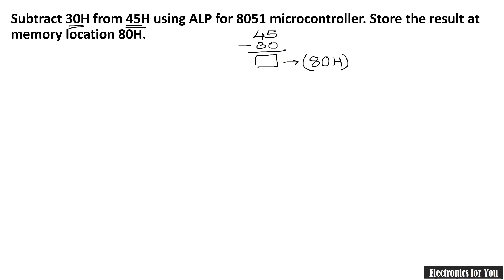Let us start the program. In this case, first we are having a sub-instruction here, that is the SUBB. It is always SUBB comma something — a comma with some operand. And in this case, the number which is to be subtracted must be the second operand.